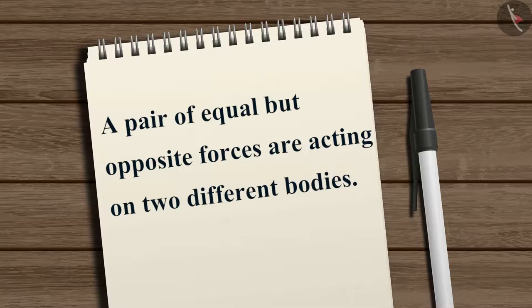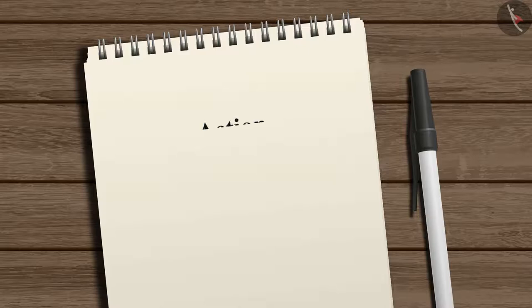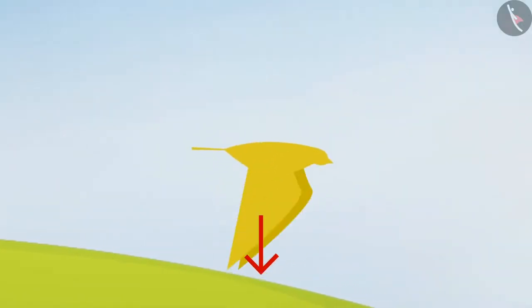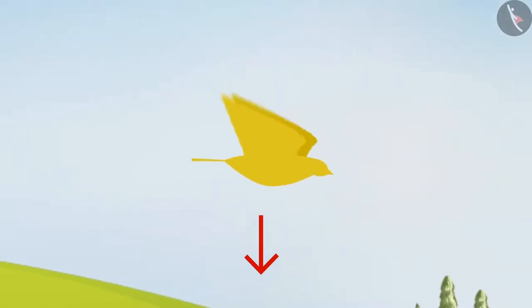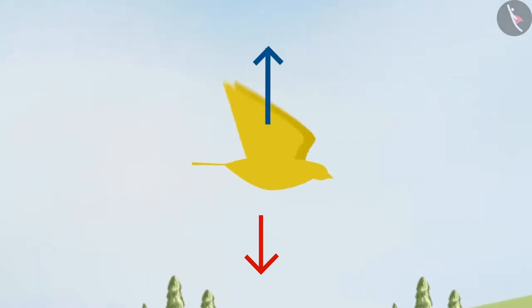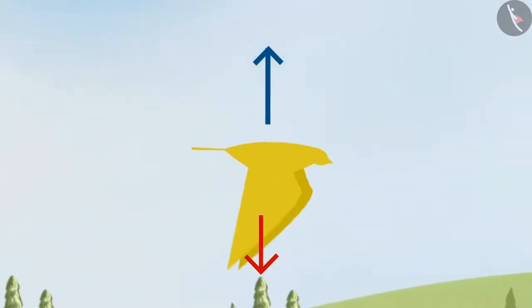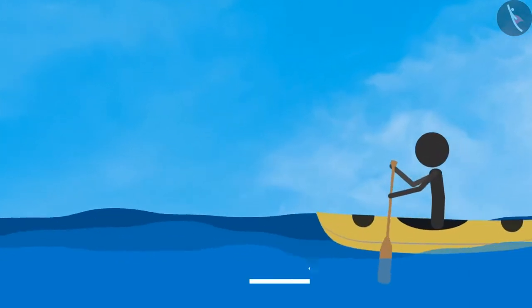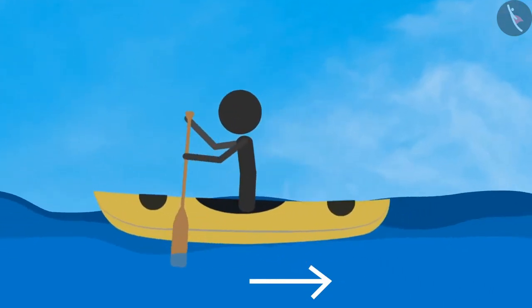In these examples, we observed that a pair of equal but opposite forces are acting on two different bodies. We can refer to one of the two forces as the action and the other as the reaction. Like in the first example, if the bird flapping its wings downwards is the action, then the reaction is the force that helps the bird fly. Similarly, in the second example, the action is pulling the oar backwards and the reaction is the boat moving forward.